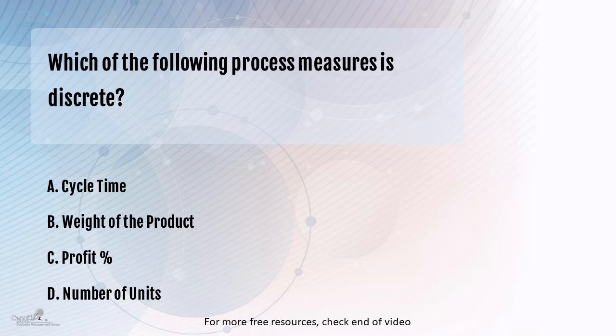The options that we have here are cycle time, weight of a product, percentage of profit, and number of units. Now in order for you to answer this question, you must know what are the different types of data.